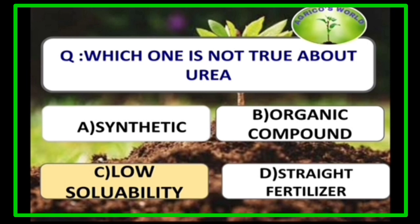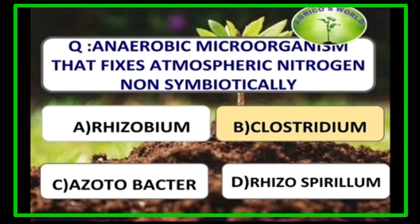What is not true about urea? Low solubility is not true, because urea has a high solubility ratio. The anaerobic microorganism that fixes atmospheric nitrogen non-symbiotically is Clostridium.